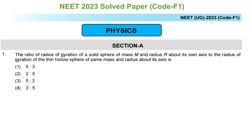This question is of rotational motion: the ratio of radius of gyration of a solid sphere of mass M and radius R about its own axis to the radius of gyration of a thin hollow sphere of the same mass and radius about its axis. Option 1: 5 is to 3, Option 2: 2 is to 5, Option 3: 5 is to 2, and Option 4: 3 is to 5.